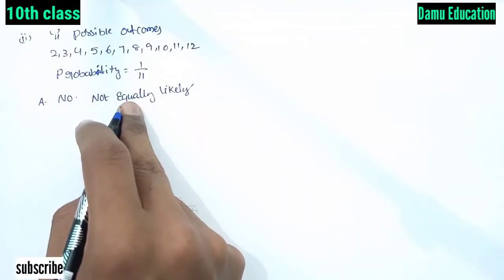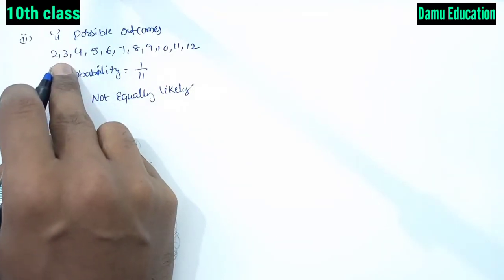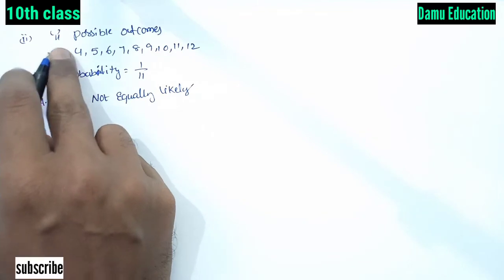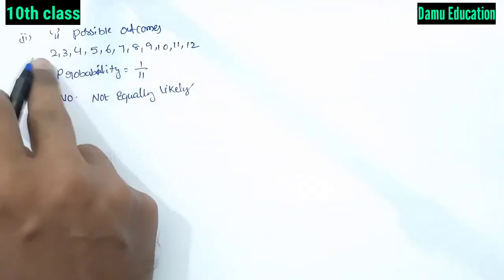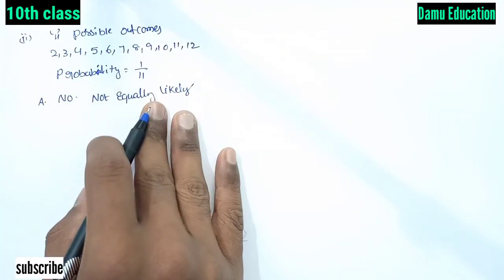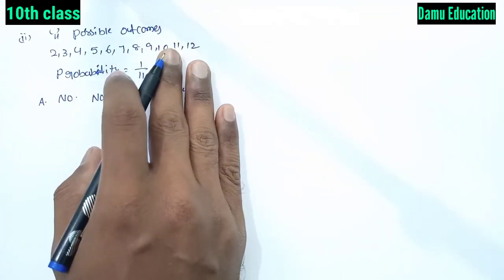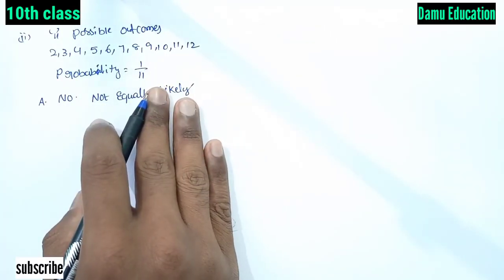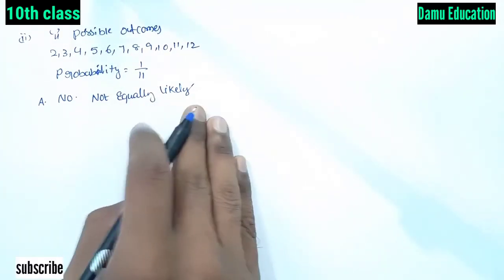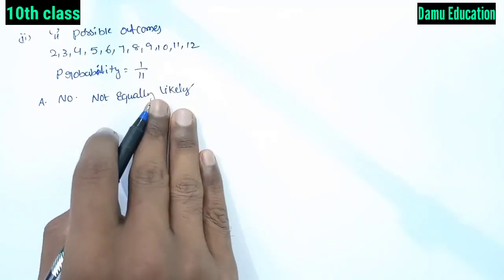The reason is that these 11 outcomes are not equally likely. For example, the sum 2 has only 1 favorable outcome out of 36, while sum 7 has 6 favorable outcomes. So each outcome does not have equal probability of 1/11. Therefore, the student's argument is incorrect. Thanks for watching — please subscribe.